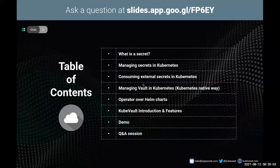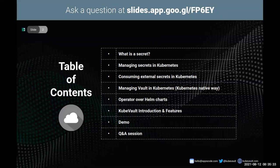Here is our table of contents. First, we're going to take a look at what a secret is and how to manage secrets in Kubernetes, how you can consume external secrets in Kubernetes, what some of the practices are, and what can be your go-to options. Then we'll see how to manage Vault in a Kubernetes-native declarative way, do a side-by-side comparison with an operator and Helm charts, and see KubeVault and its features. The later half will include a demo, followed by a Q&A session. You can post your questions at the link shown at the top of the slide.